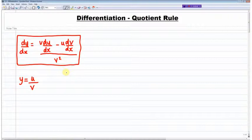What I normally do is I normally use the product rule and the way I do this is I say this u divided by v can be written as y is equal to u multiplied by v to the power of minus one and here we've got a function multiplying another function and therefore we can use the product rule.